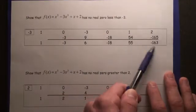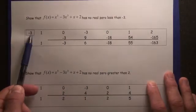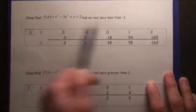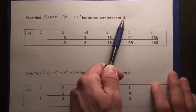Positive, negative, positive, negative, positive, negative. Therefore, f(x) has no real zeros less than negative 3.